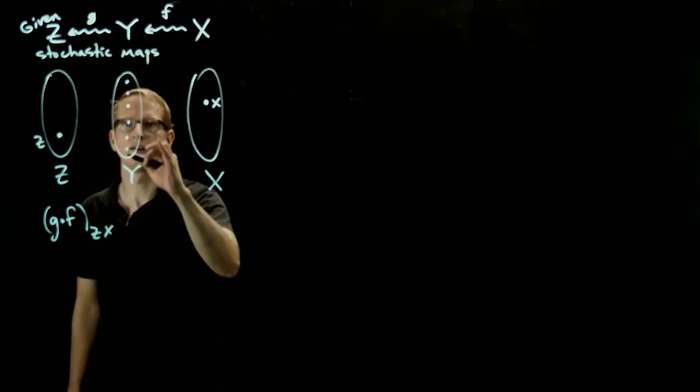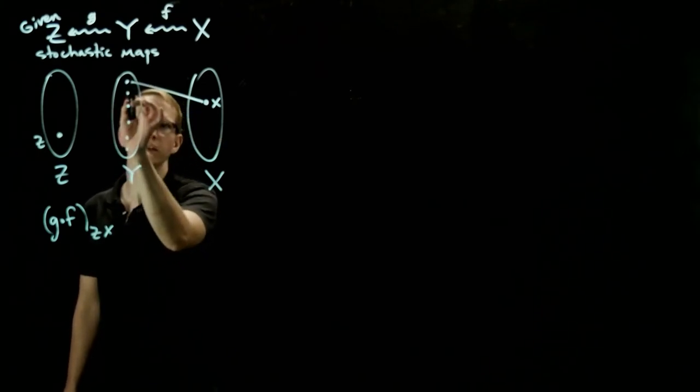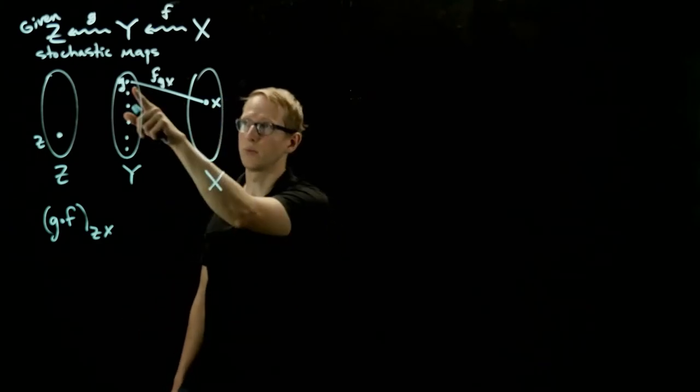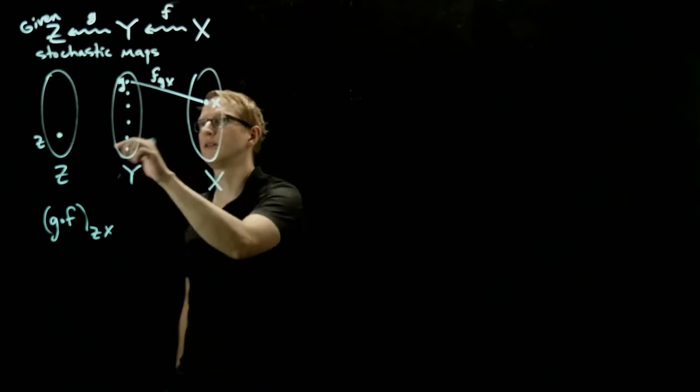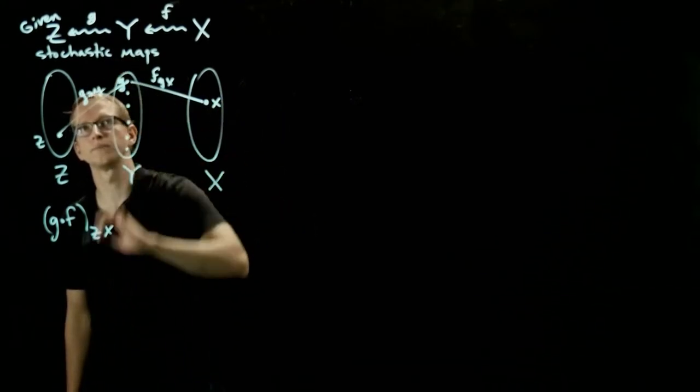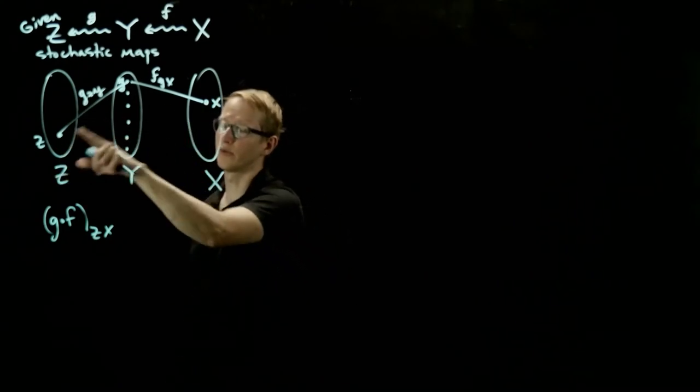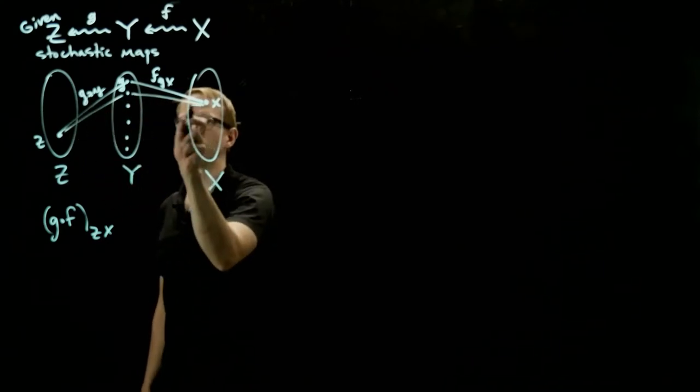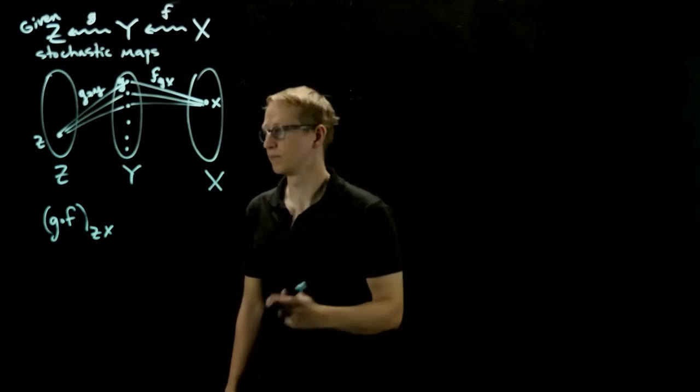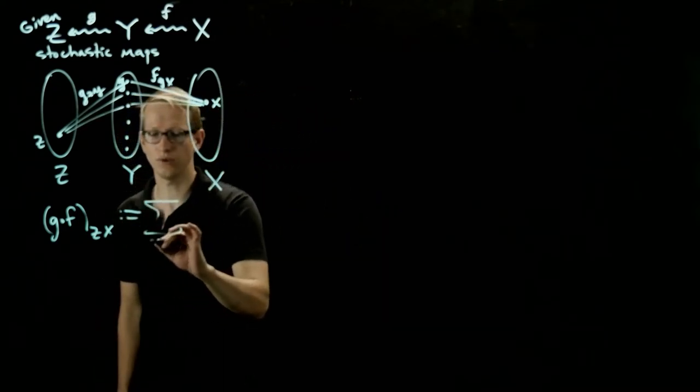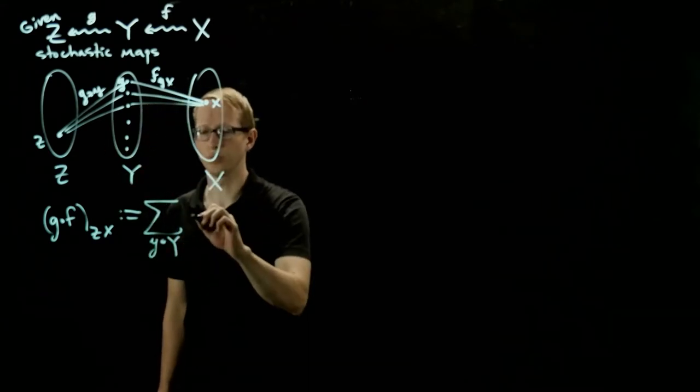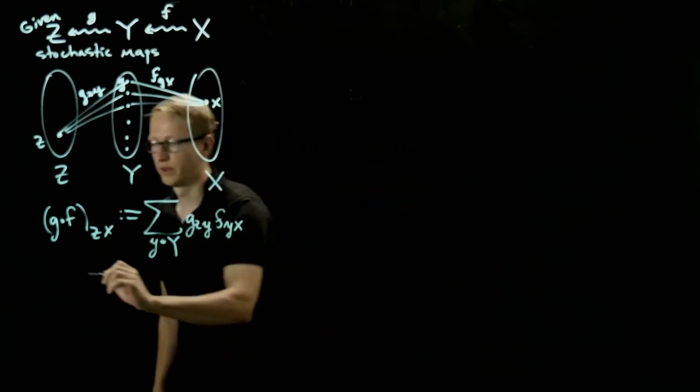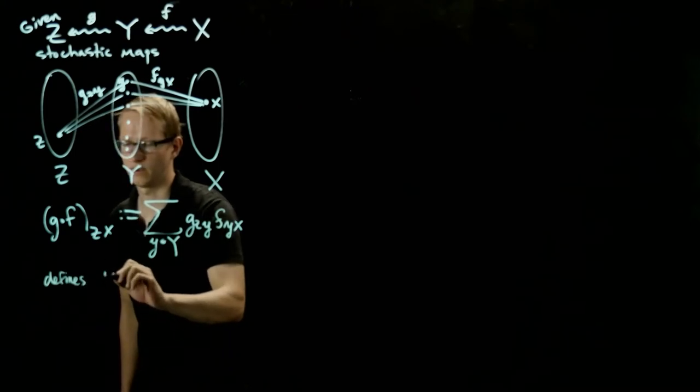So the way that you get that is, I look at all the elements of Y, and I look at, given x, what is the probability of that element y occurring? Let's say that this is the element y, then this is f_y,x. So given x, the probability that y occurs, and going from y, what's the probability that z occurs? That also has a probability, which is g_z,y. And so the probability of z given x is taking all of these probabilities by varying y, and multiplying the corresponding ones when they match up, and then adding them all. So this is defined to be the sum over all elements in Y, g_z,y f_y,x. So this is what the composition of stochastic maps is.